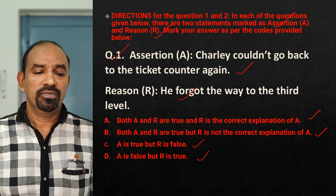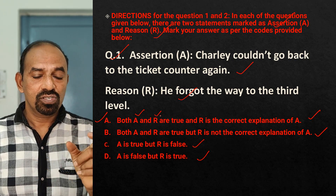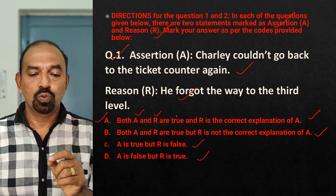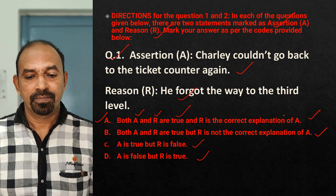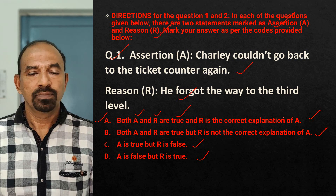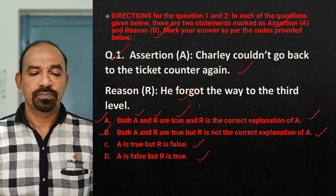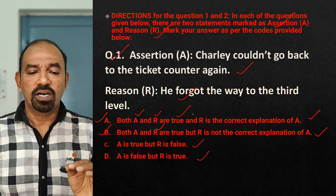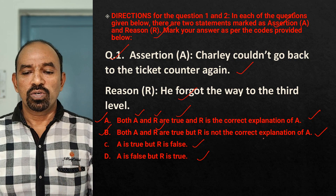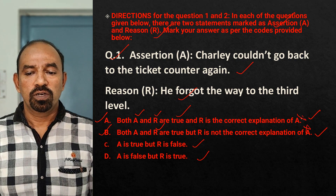Look at option A: Both Assertion and Reason are true and Reason is the correct explanation of A. No, that is not correct. Option B: Both Assertion and Reason are true, but R is not the correct explanation of A. This is also not true.